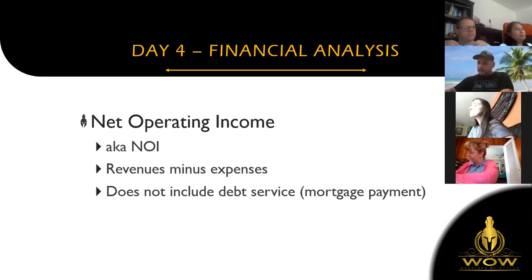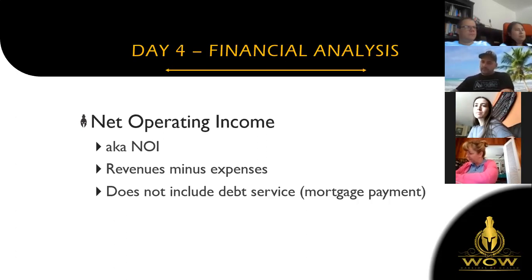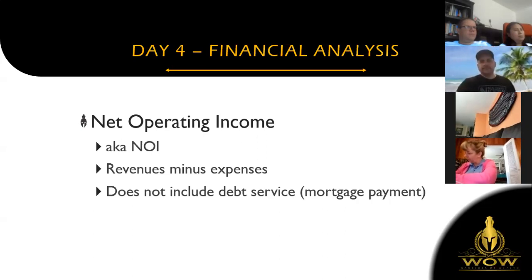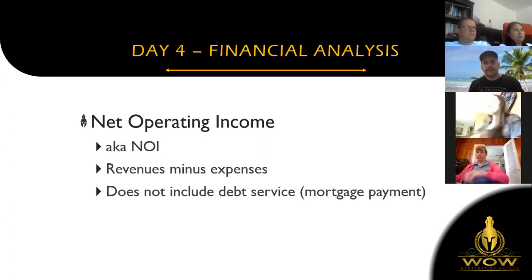The only thing not included in NOI is the mortgage payment — in multifamily real estate we refer to that as debt service. So it's the revenues: all the rents coming in, and if there's any other financial revenue like storage revenue or pet rent, that's all revenue. Expenses are things like property taxes, insurance, maintenance, and property management. What's left is net operating income. If you had no mortgage payment, your NOI would be the cashflow.